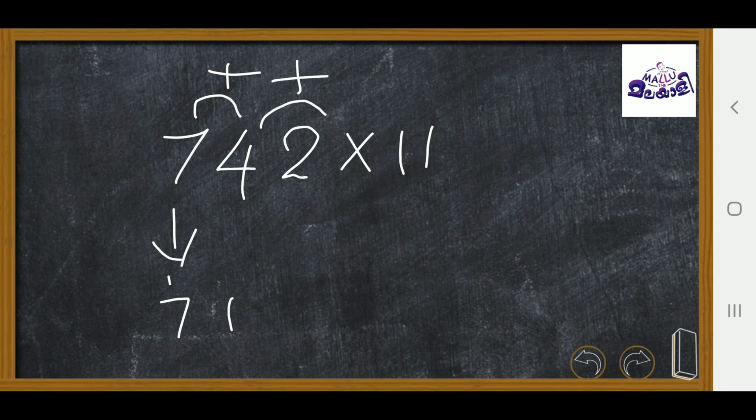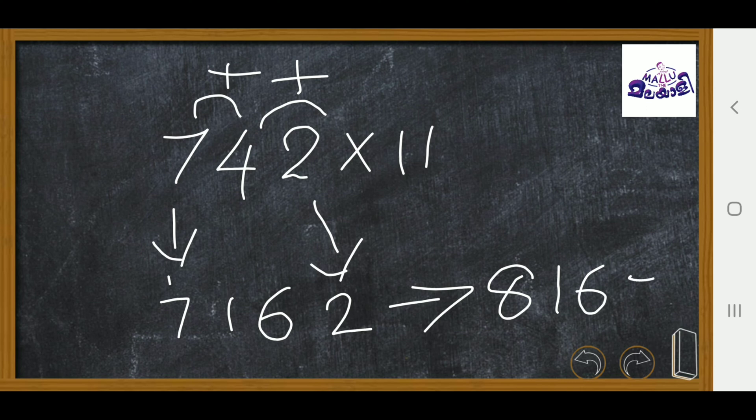So the answer is 4 plus 2, then 6, and then the last is 2. Then the answer is 7, 1, 6, 2. That's why the answer is 8162. Let's check with the calculator.